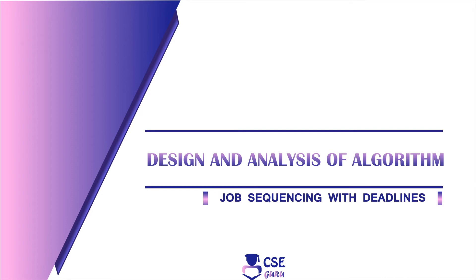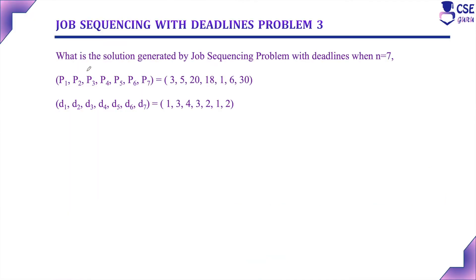Welcome to CSE Guru. In this session, we will discuss example 3 to implement the job sequencing problem with deadline. The job sequencing problem is: given n jobs, we need to consider each job, and if it can be completed within its deadline and earns maximum profit, we can add it to the job subset to assign to the computer for execution. We have already discussed the steps to implement this using a greedy algorithm, and that link will be provided in the description. Now we will consider this third example.